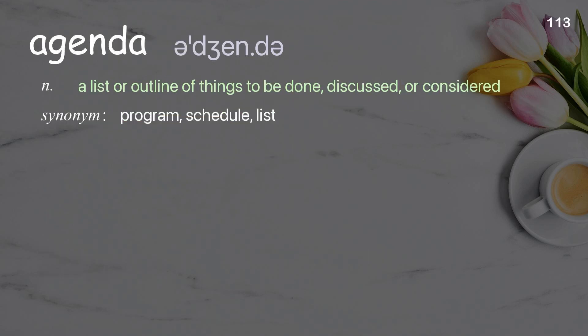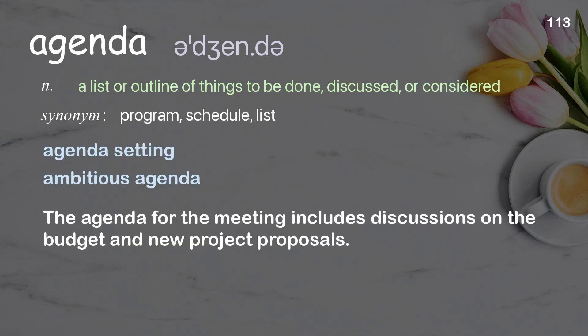Agenda: A list or outline of things to be done, discussed, or considered. Examples: Agenda setting. Ambitious agenda. The agenda for the meeting includes discussions on the budget and new project proposals.